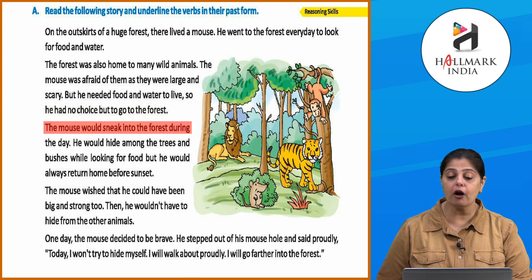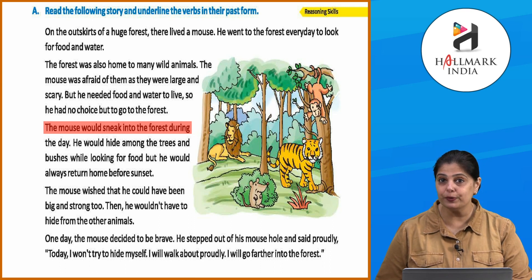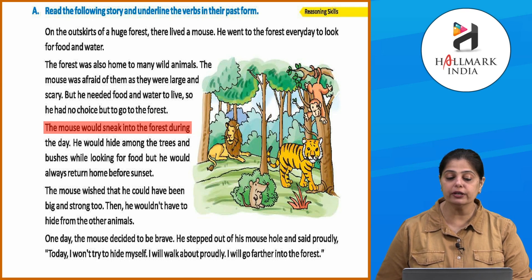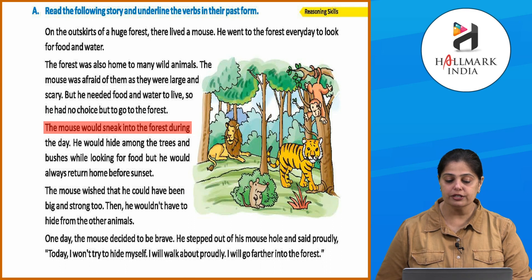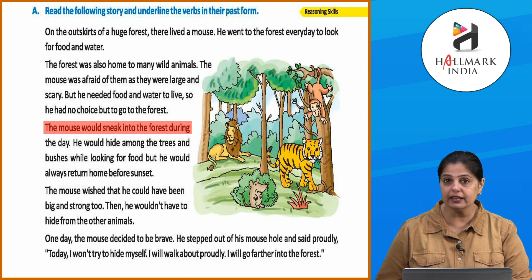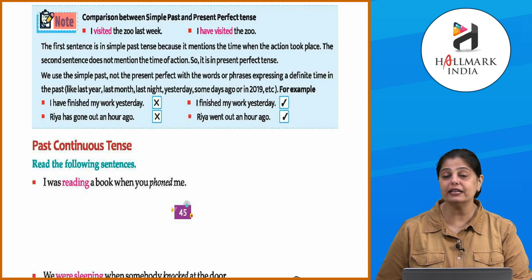Now let's complete the story of the mouse and the snail using the verbs in past tense. One day a snail was crawling around a huge garden. Just then he saw a large house in front of him. He went inside the house. He was looking at all the furniture when he spotted a little mouse looking at him. The mouse asked the snail: 'Who are you? Where are your legs? How do you walk around?' Use the help box words and fill them in past tense.